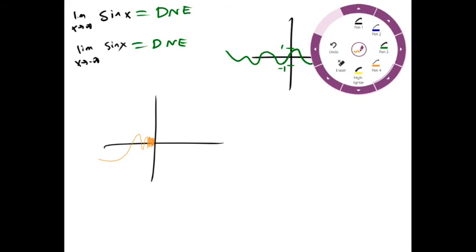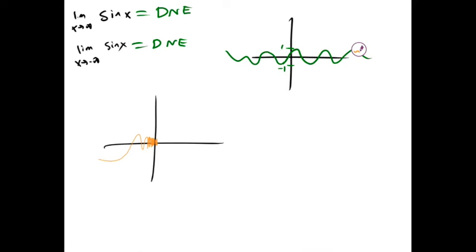It begins to oscillate very heavily as we approach 0. It actually never settles on a definite value in here. This is sine 1 over x. So that's why we have a non-existent limit.